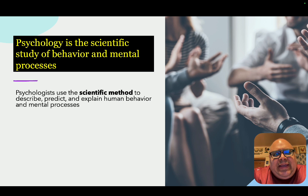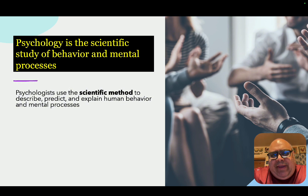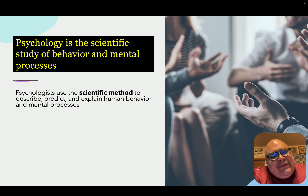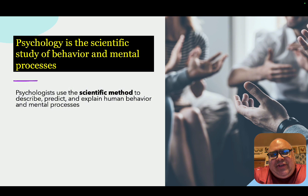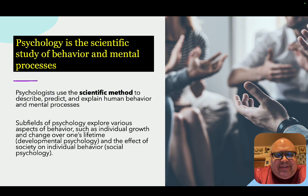The key here is the scientific study. Psychologists use the scientific method to describe, predict, and explain human behavior and the processes that happen inside of our minds. The scientific method is what separates psychology from other fields that look at how humans behave — fields like history and philosophy, which are important but are not grounded in the scientific method the way psychology is.